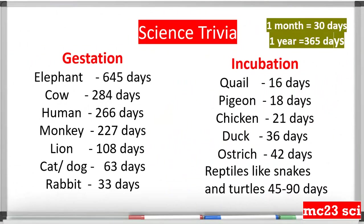For a science trivia: the gestation period is the time from fertilization to birth. For an elephant, it takes 645 days to give birth; cows take 284 days; humans take 266 days.